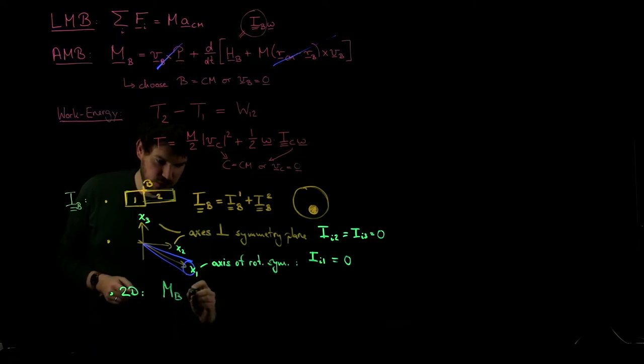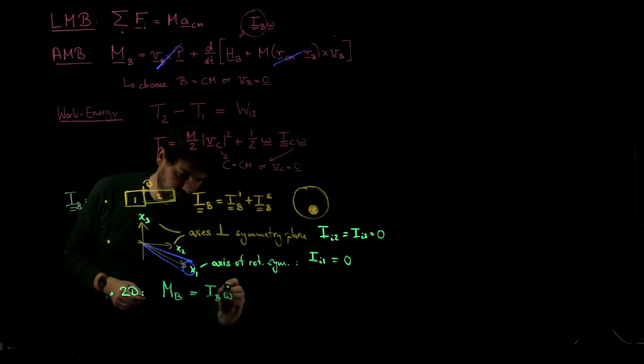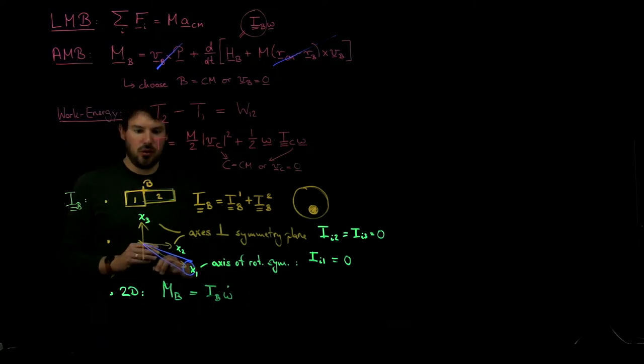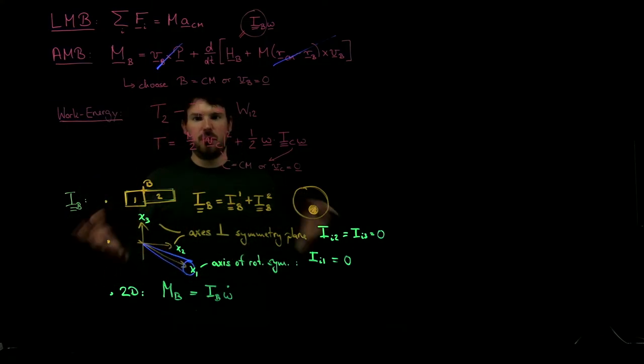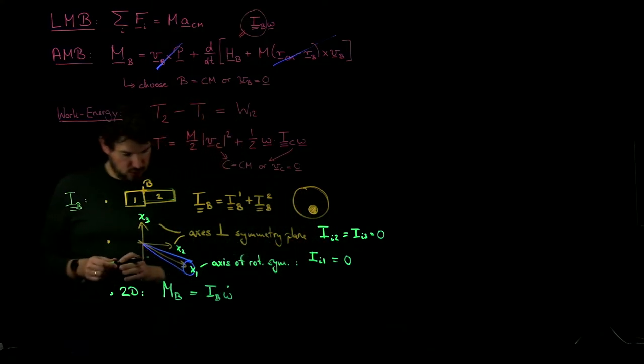If we're in 2D, that's a further thing we looked at. Then things simplify a lot. Angular momentum balance simply reduces to the net torque equals IB times omega dot, where this IB is what we call the centroidal moment of inertia. We had seen how exactly this works, for example, for a bar or a cylinder that's rotating.